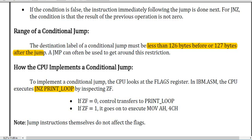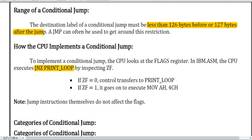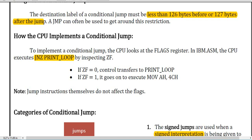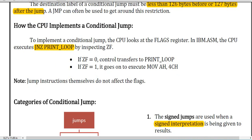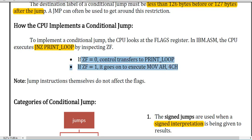The range of a conditional jump: the destination label must be less than 126 bytes before or 127 bytes after the jump. How the CPU implements the conditional jump — if the zero flag (ZF) is zero, control transfers to 'print the loop.' If the zero flag is one, it continues in execution mode. Those two conditions produce two separate outputs — that is how the conditional jump works.